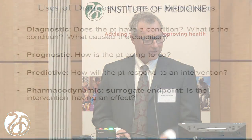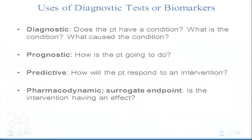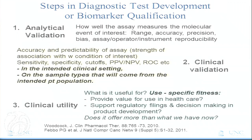Diagnostic tests and biomarkers come in several flavors we've discussed already: diagnostic, prognostic, predictive, pharmacodynamic, or surrogate endpoints. The last is particularly interesting sometimes in clinical trials, but also in clinical use — for example, PSA levels for monitoring prostate cancer patients.